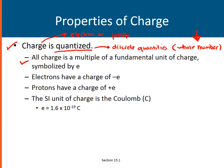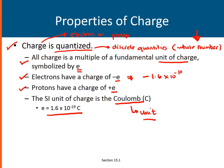So all charge is a multiple of a fundamental unit of charge, which is symbolized as E. Electrons can be symbolized as negative E and protons can be symbolized as positive E. Now the value of E is 1.6 times 10 to the negative 19 Coulomb. Coulomb, by the way, is the unit of charge. So this means the value of the charge of an electron is negative 1.6 times 10 to the negative 19 Coulomb, while the charge of a proton would be positive 1.6 times 10 to the negative 19 Coulomb.